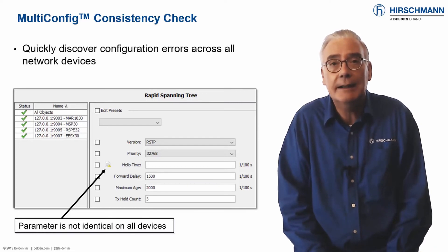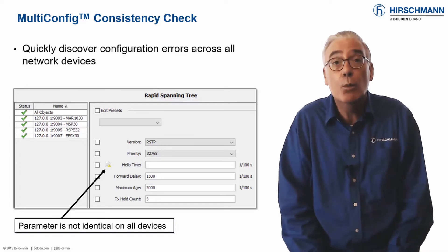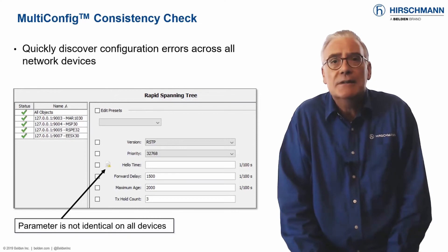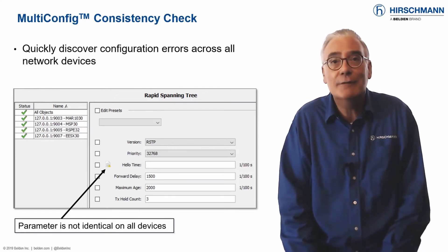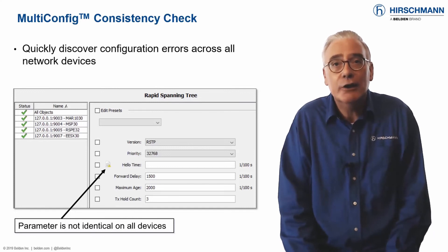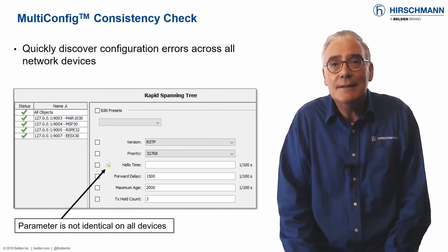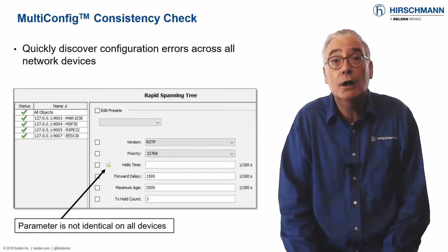If the value of a parameter across all devices is identical, it's displayed. If the value is not identical, a warning appears next to the parameter. To read the parameter per individual device, just select the relevant IP address. You will find the rogue value in no time at all. This simple technique will save you valuable time when investigating a network anomaly.